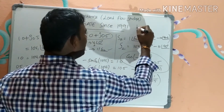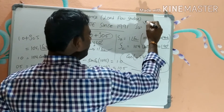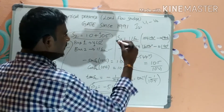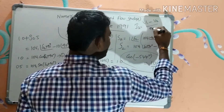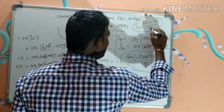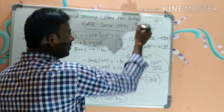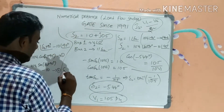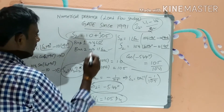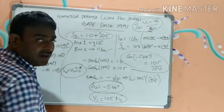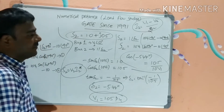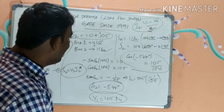So these are the values of V1 and delta2, obtained using the formula I2 = (V1−V2)/Z, where Z is the impedance connected between bus 1 and bus 2. Then equating S2 = V2·I2 conjugate, we can find the unknown values delta2 and V1. This is how we solve this GATE examination problem.